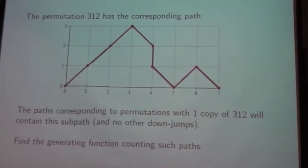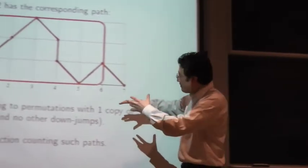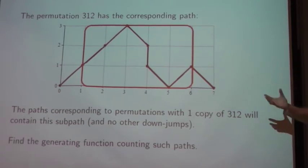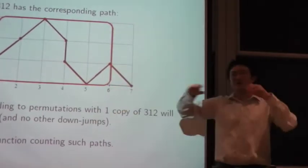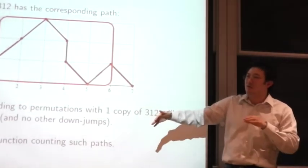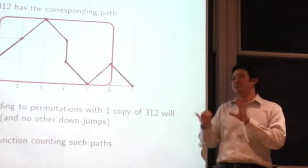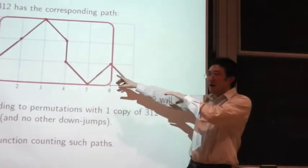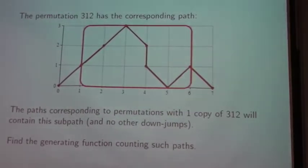So you have this permutation. And the idea is that you can extract a relevant subpath, shown in the red box. And basically Fulmec shows that pretty much any path that contains this subpath, that's a generalized Dyck path, it contains this subpath, and also does not contain any other down jumps anywhere. Those all correspond to the permutations you want, like permutations of one copy of 3-1-2.